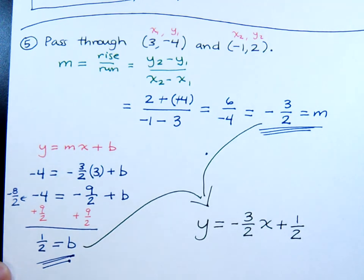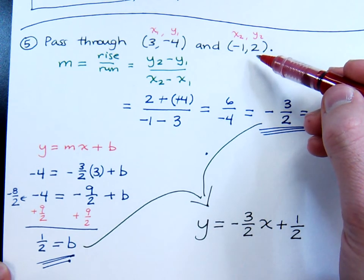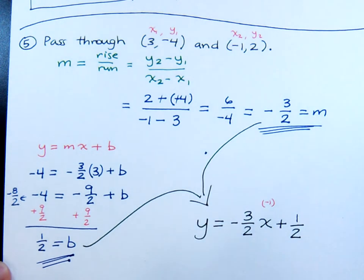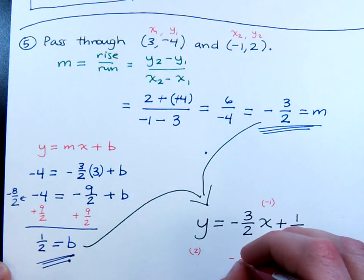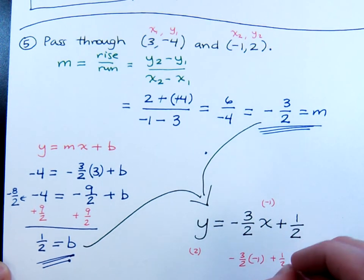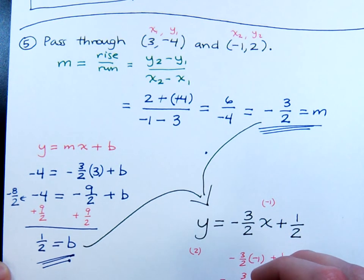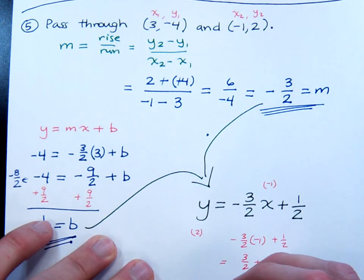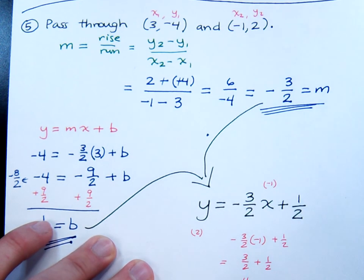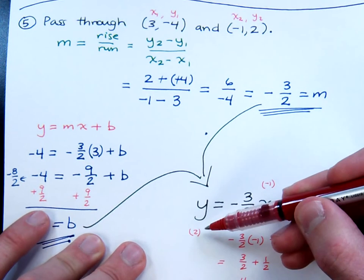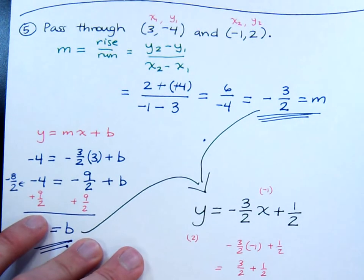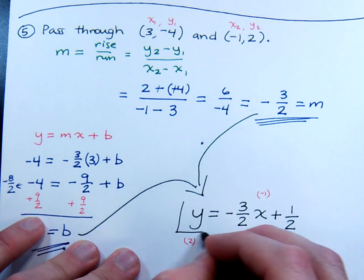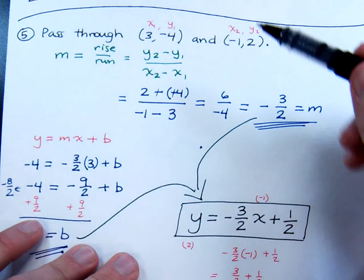Now for us to make sure that this is the right answer, let's check this against the other point that we have. The other point that I had was negative 1, 2. That means if I were to plug in negative 1 here, I should get 2 whenever I'm done. So let's see. Negative 3 halves times negative 1 plus 1 half. Positive 3 halves plus 1 half. And this is going to equal 4 over 2 which equals 2. And that's exactly what I was supposed to have from over here. So yes, everything checks out. And I know that this is the equation for my line that passes through these two points.